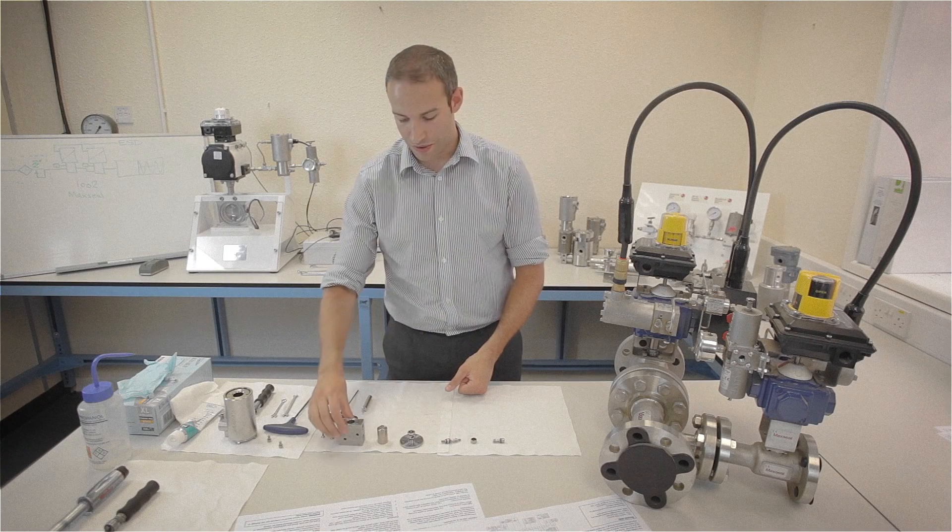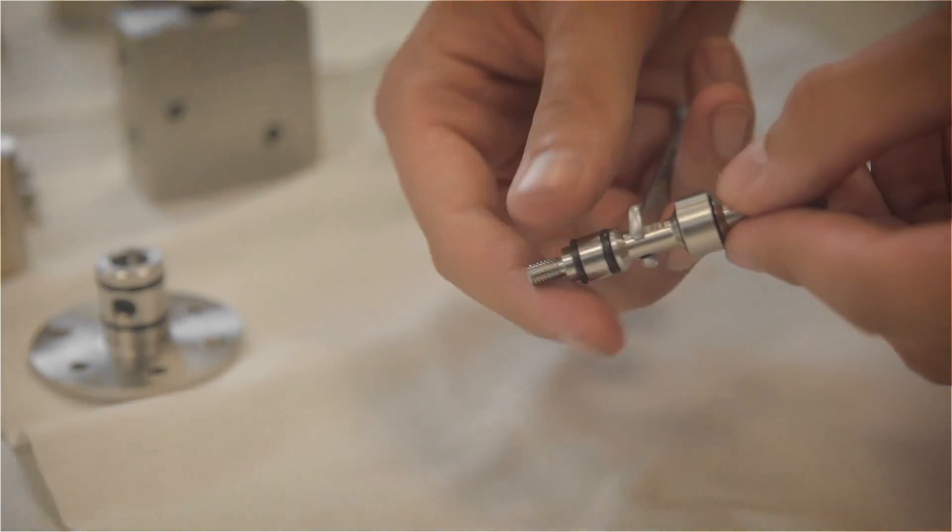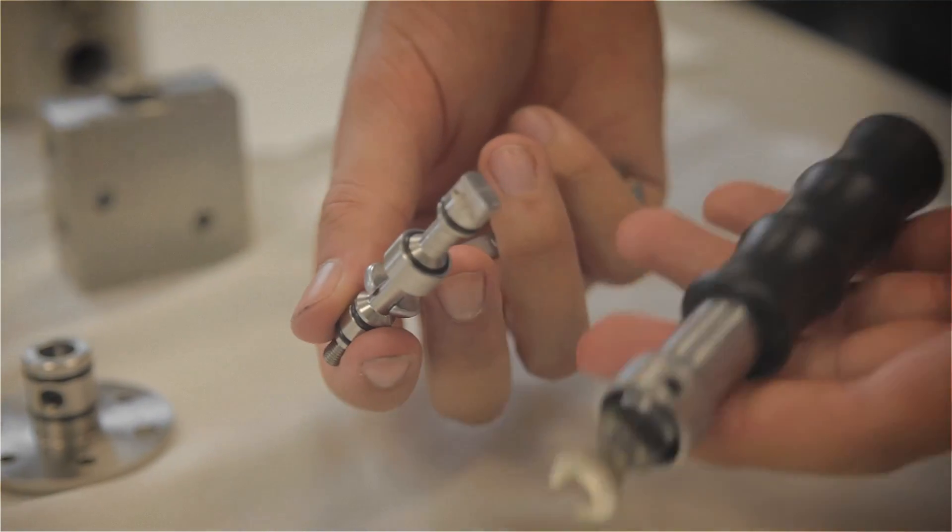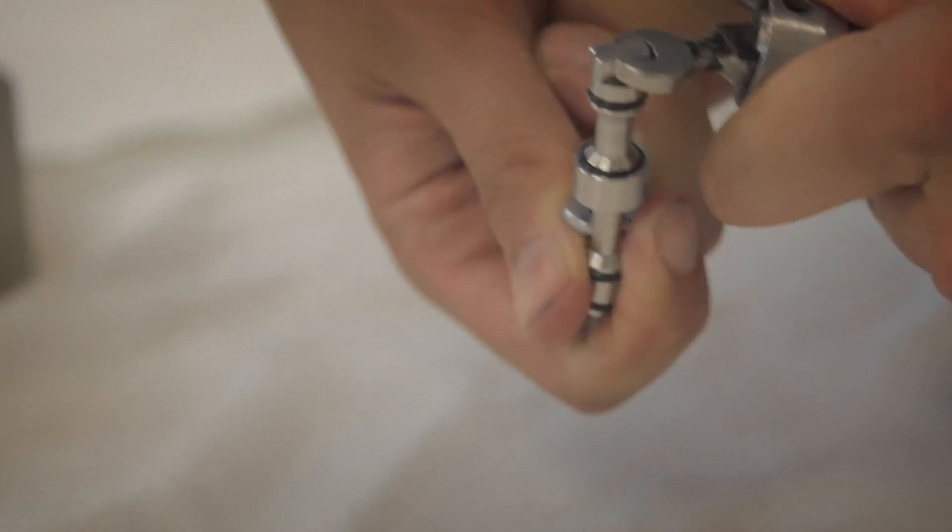Now, the next stage is to reassemble our valve. We're going to install the twin seat into the upper and lower poppet. Use a 5mm spanner and a torque wrench and torque these to the appropriate torque setting as per the maintenance manual.